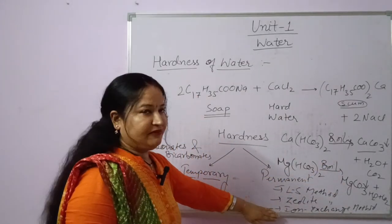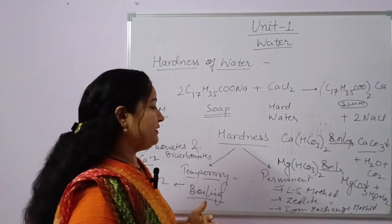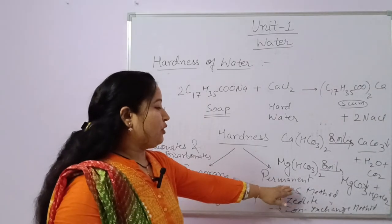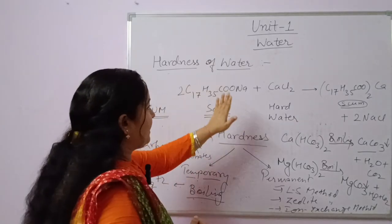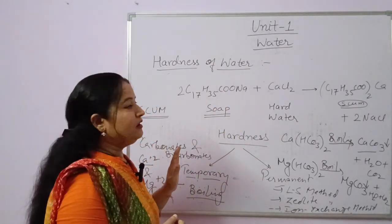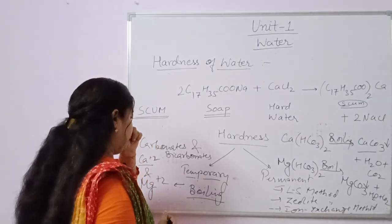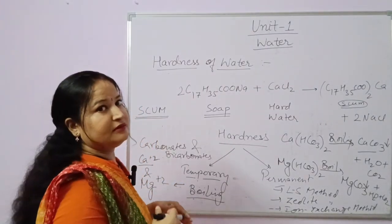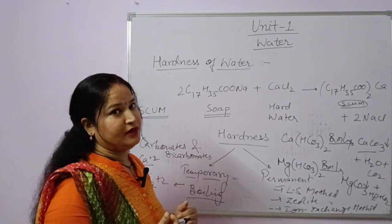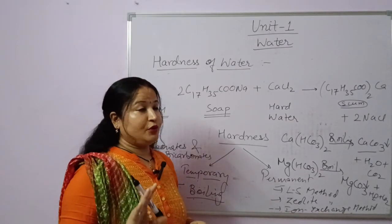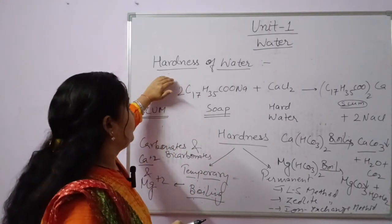Permanent hardness removal methods are longer, and we will discuss them when we talk about softening methods. In this manner, we can remove both temporary and permanent hardness. Temporary hardness is known as carbonate hardness and permanent hardness is known as non-carbonate hardness.